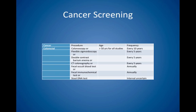Cancer screening in asymptomatic adults. For colorectal screening, you have a choice of numerous procedures including colonoscopy, flexible sigmoidoscopy, double contrast barium enema, CT colonography, fecal occult blood tests, fecal immunochemical tests, or stool DNA tests. The recommended age is over 50 for all studies. Frequency is every 10 years for colonoscopy, every five years for flexible sigmoidoscopy, five years for double contrast barium enema, five years for CT colonography, annually for fecal occult blood tests and fecal immunochemical tests, and intervals uncertain for stool DNA tests.